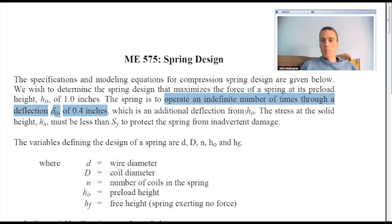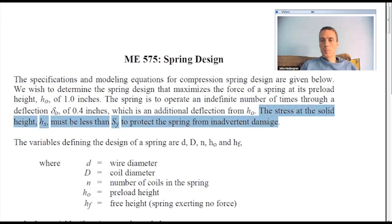It's going to operate indefinitely over time through a deflection of 0.4 inches. So those distances are going to be important here, which is an additional deflection from H knot. There's a preload height, and then it's going to operate through a deflection of 0.4 inches many times. Also, as Frank mentioned, there's a constraint here. Stress at the solid height HS must be less than SY to protect the spring from inadvertent damage. That's one constraint that many people might miss on this problem.